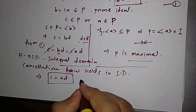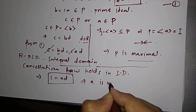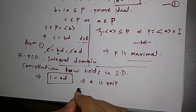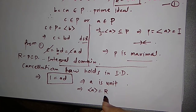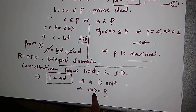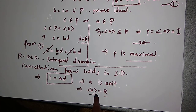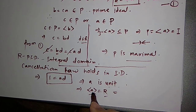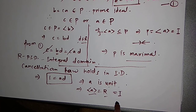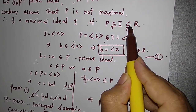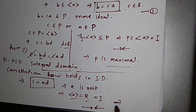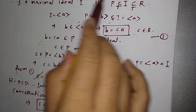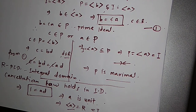That means a is a unit, which implies the ideal generated by a has to be the whole ring R. We know that if any ideal contains a unit, then that ideal has to be all of R. But the ideal generated by a was our maximal ideal I, and we took I to be properly contained in R. So again we get a contradiction. Whatever we assumed — that P is not a maximal ideal — is not true, which implies P is maximal.